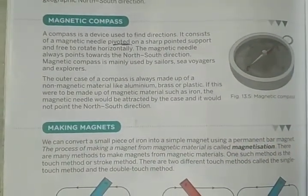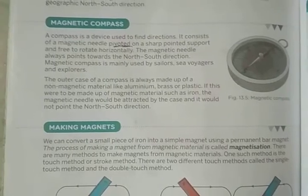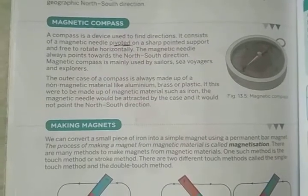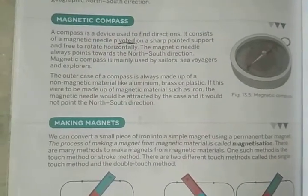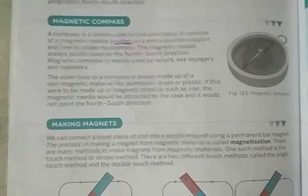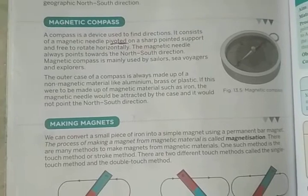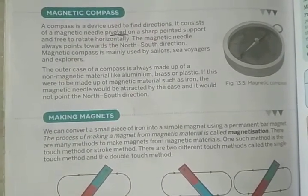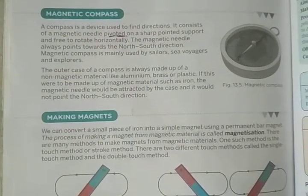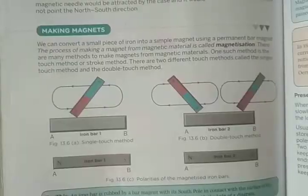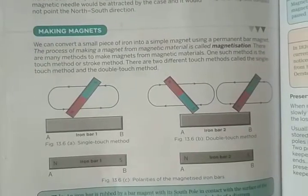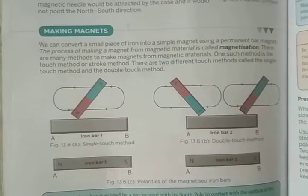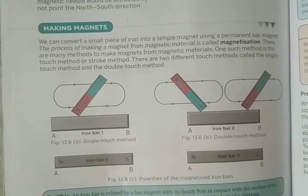How can we make a magnet? Can we make a magnet ourselves? As we have discussed, there are types of magnets — artificial and natural. When we talk about artificial magnets, it means we can make a magnet by our own.